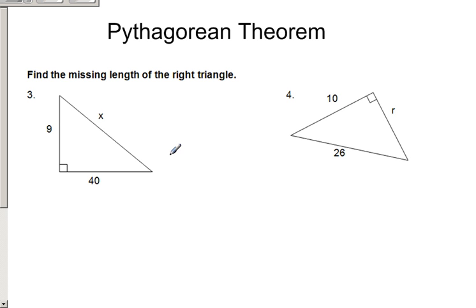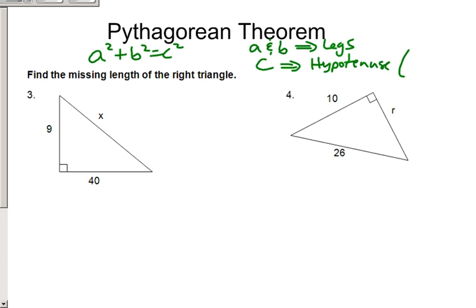Hopefully everybody knows A squared plus B squared equals C squared. What you have to know are A and B, these are legs of the triangle, and C is always the hypotenuse. Hypotenuse is always opposite the right angle and longest side. That's how you know the hypotenuse. Opposite the right angle, longest side.